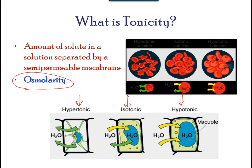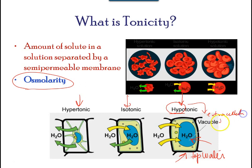In a hypotonic solution, such as tap water, the extracellular fluid has a lower concentration of solutes than the fluid inside the cell, and water enters the cell. In a living system, the point of reference is always the cytoplasm. The prefix 'hypo' means that the extracellular fluid has a lower concentration of solutes, or a lower osmolarity than the cell's cytoplasm. It also means that the extracellular fluid has a higher concentration of water than the cell. In this situation, water will follow its concentration gradient and enter the cell. This may cause an animal cell to burst or lyse.